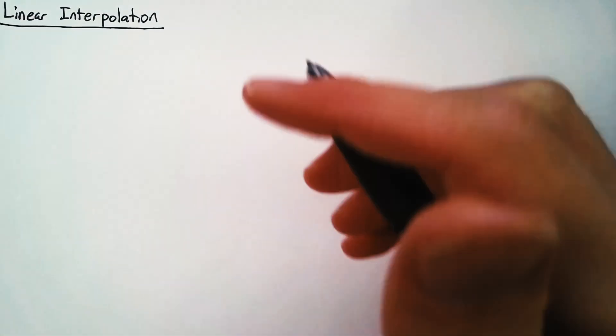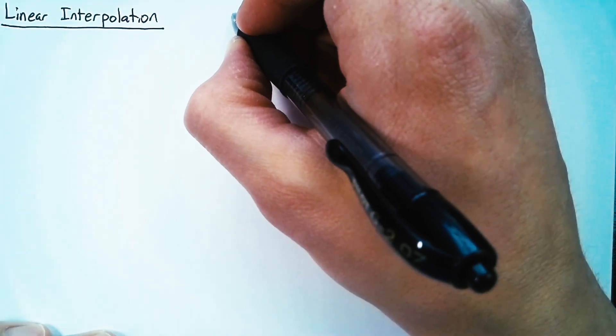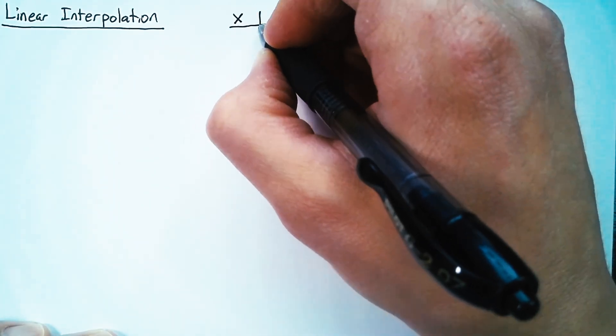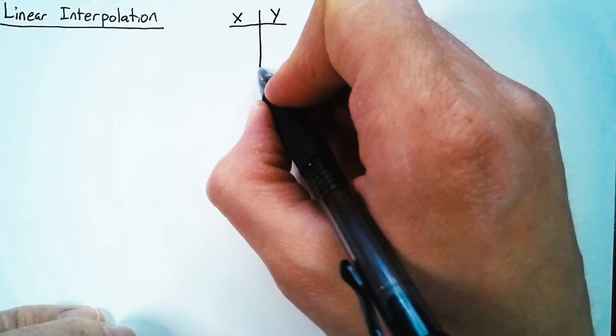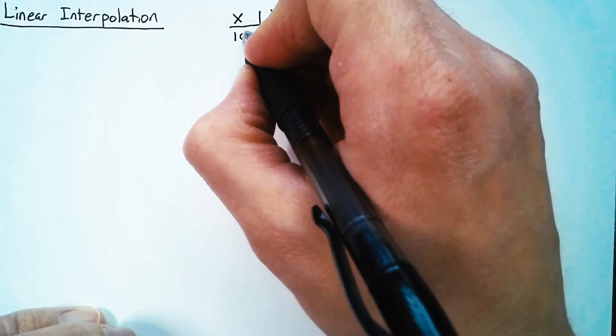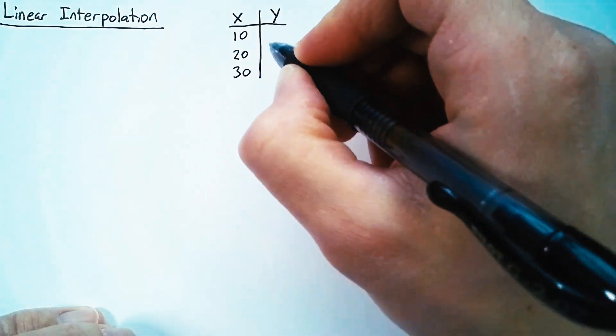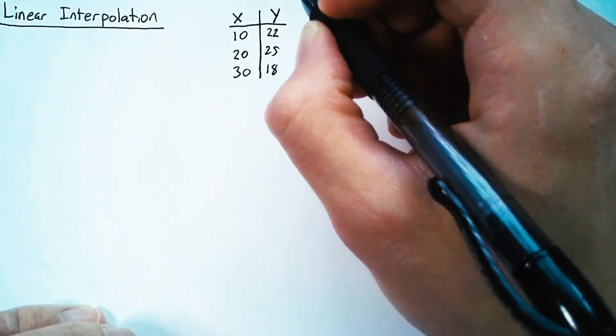Now the reason we need linear interpolation is because we run into situations where we have a table of values. We might have a table of values relating x and y. So x can be 10, 20, 30. Y is going to be 22, 25, and 18.